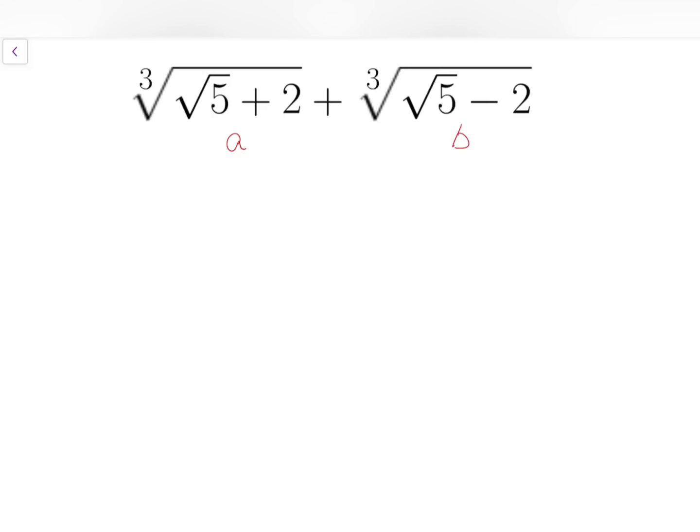We know very little about these two expressions, but we know the value of the number cubed. a cubed is simply the number inside the cube root sign, which is root 5 plus 2, while for b, if we cube it, we have root 5 minus 2.